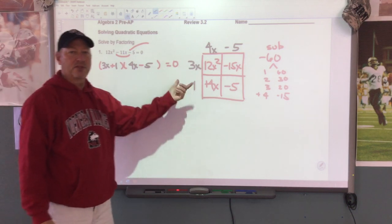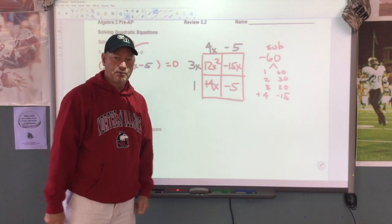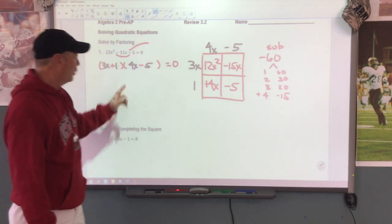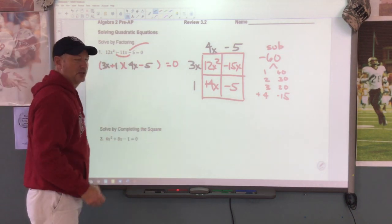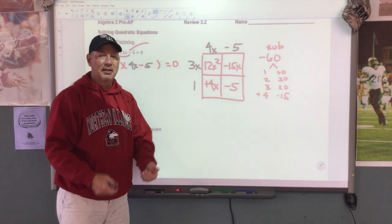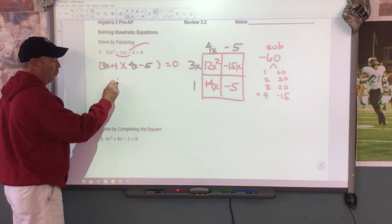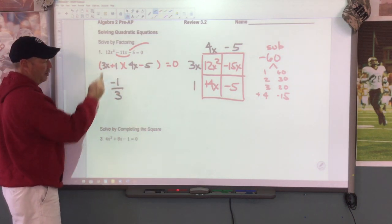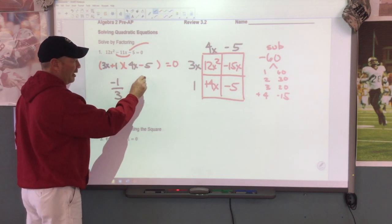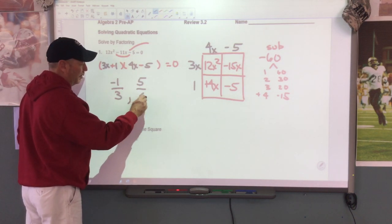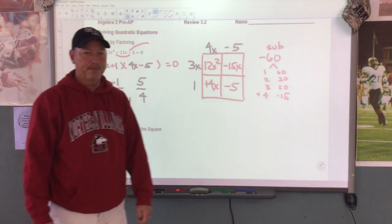We put each parentheses equal to 0, or we can do that opposite thing. Either way you do this — by putting each parentheses equal to 0 and solving for x — you should end up with a negative 1/3 and a positive 5 divided by 4. Those should be your two solutions on this problem.